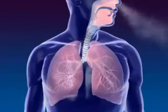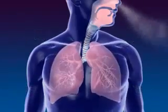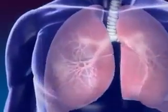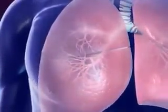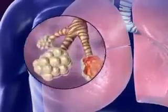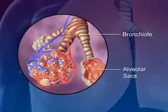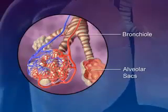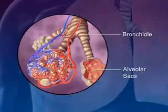Lungs are spongy tissue with alveoli and blood capillaries. Breathing occurs because of the expansion and contraction of the lungs. The bronchi carrying the air subdivide into smaller branches called bronchioles. At the end of each bronchiole are the alveolar sacs, surrounded by blood capillaries and containing millions of single-layer alveoli cells where gas exchange takes place.